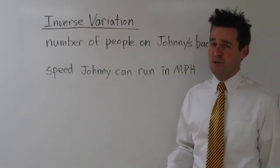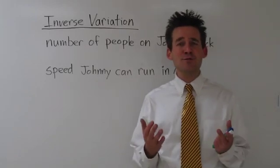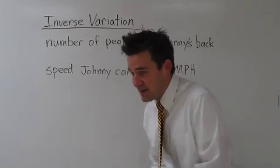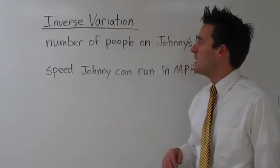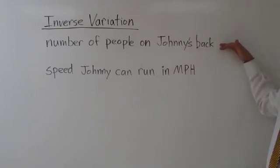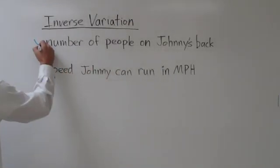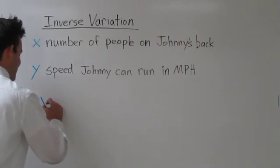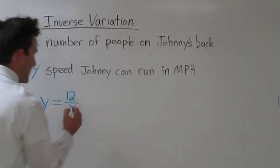Now let's look at an example of inverse variation. Let me tell you about my friend Johnny. Johnny's a very strong guy — in fact, he's so strong he can run with someone on his back. He doesn't run as fast as if no one was on his back, but it's still impressive. Here, we have the number of people on Johnny's back and the speed Johnny can run in miles per hour. If we let x be the number of people on Johnny's back and y be the speed Johnny can run in miles per hour, we can model this relationship inversely using this formula: y equals 12 over x.